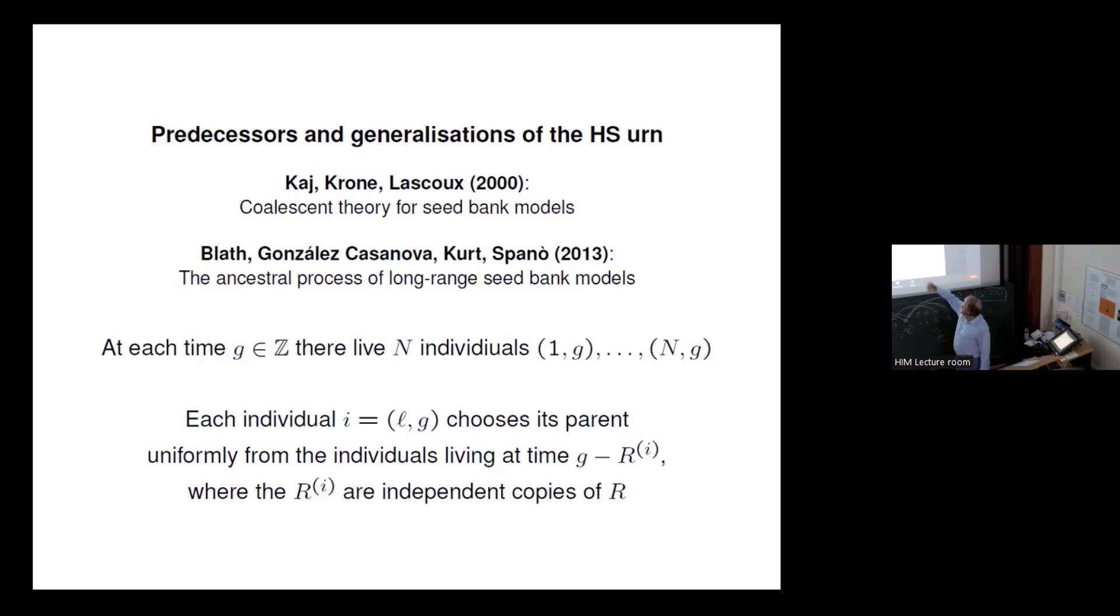So this paper by Adrian and co-authors is on a very similar situation where we don't have one individual per time but capital N of them, right? Imagine you have capital N of them indexed by one up to capital N at time G.